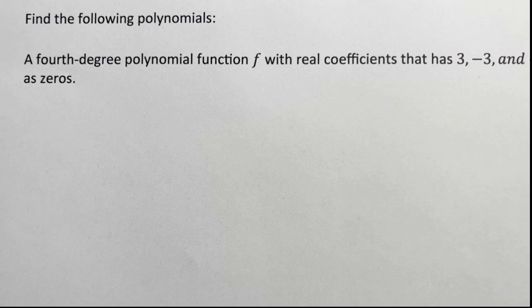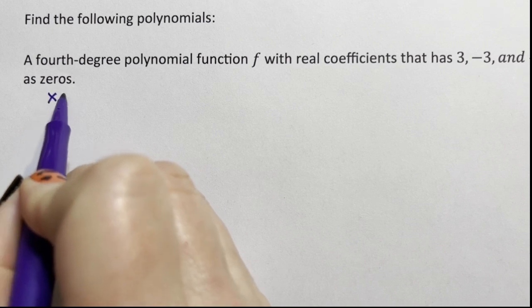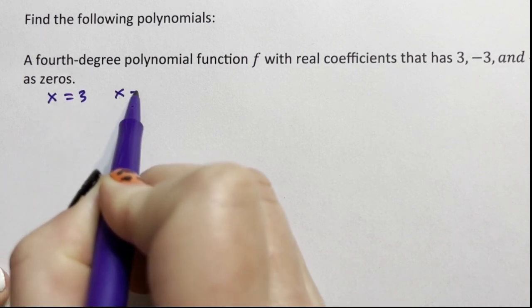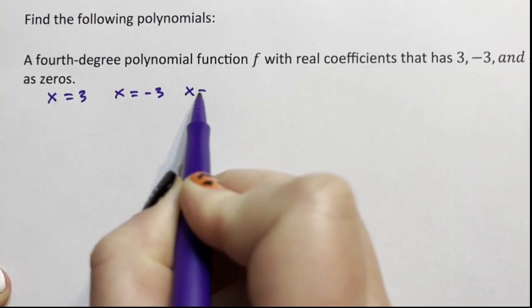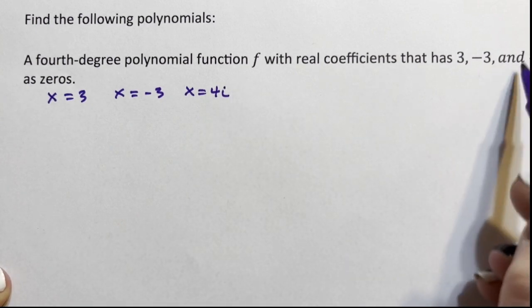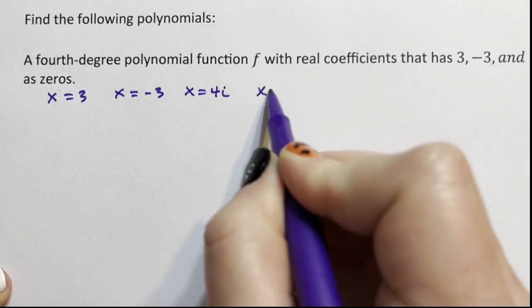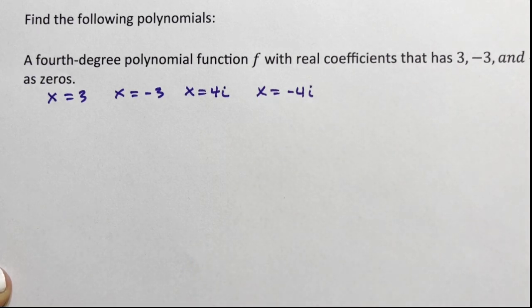All right, so when you're given the zeros, that means these zeros are x = 3, x = -3, x = 4i, and because of complex conjugates, x = -4i is also a zero.